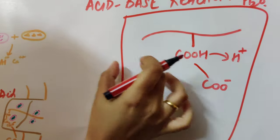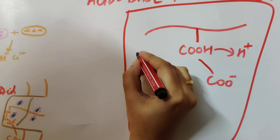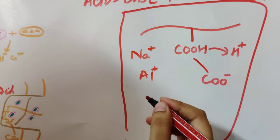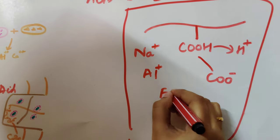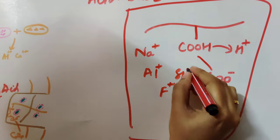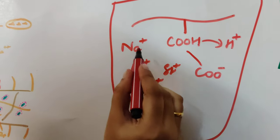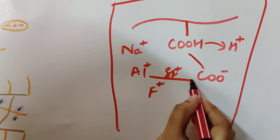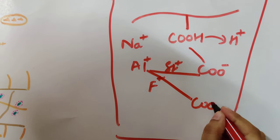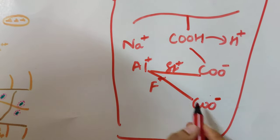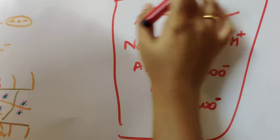Ions like sodium, aluminium, fluoride, and strontium will be leached from this powder. This will actually form a bond with the COO minus which is present in the liquid. Then it will form something called poly salts.